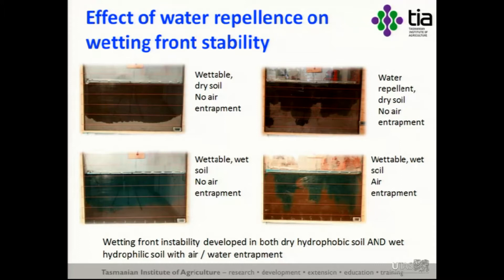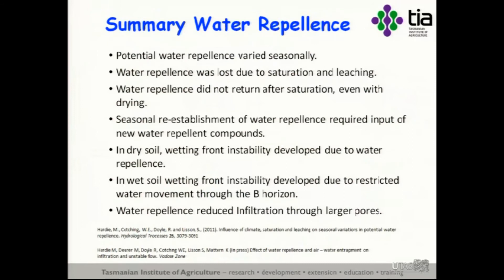The same soil in its water-repellent state — before being leached by winter rainfall, collected from the same site with no air entrapment — developed these wetting front instabilities like those seen in the dye experiments. And fascinatingly, that same wettable soil — no longer water repellent, at field capacity — but with air entrapment, developed the same degree of wetting front instability as in the wet soil during infiltration. So closure or inability to displace existing soil water further down the profile has resulted in instability developing in the A horizon under both dry and wet conditions — dry conditions due to water repellents.